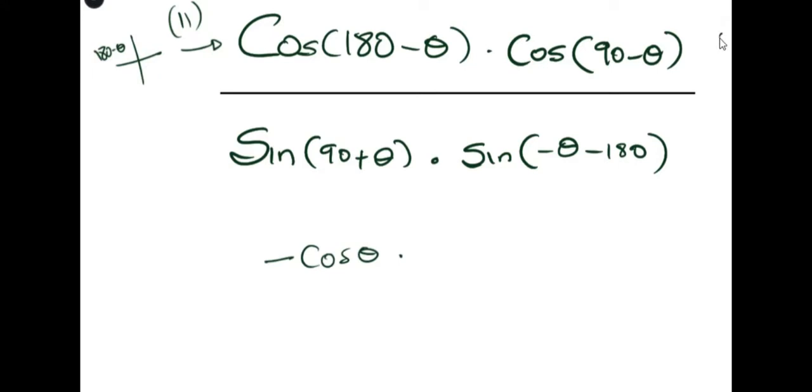We go to this one over here. This is 90 minus theta, this is in the first quadrant, what we just talked about right now. And we know that when you change cos to sin because of the 90, we just have it as sin theta.